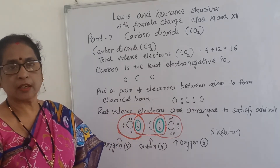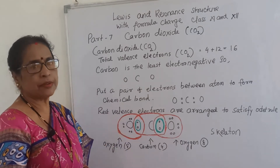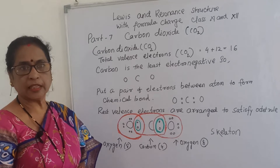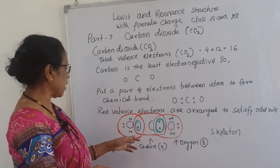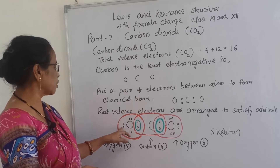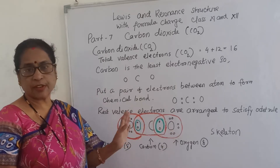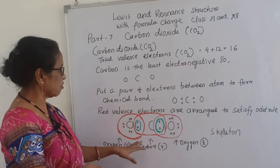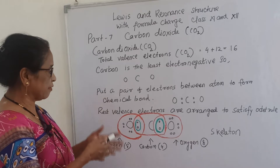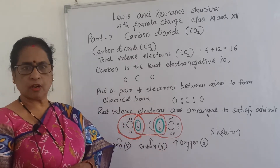What about the other valence electrons? Only four are used and the remaining twelve electrons you will arrange to satisfy the octet rule. Counting all electrons: two, four, six, eight, ten, twelve, fourteen, sixteen - that means all 16 valence electrons are placed. But this is not satisfying octet with carbon dioxide yet. Then we will see whether the oxygen satisfies the octet rule or not.